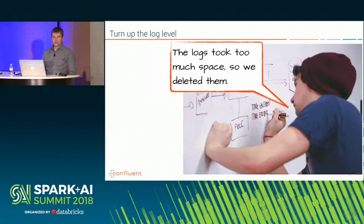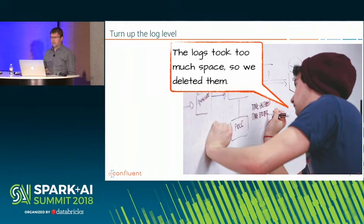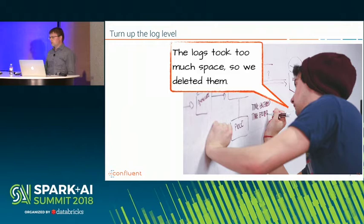If you're still having problems, the next thing we recommend is to turn up the log level. Sometimes clients tell us they added debug or trace logs but then deleted them because there were too many — that's not very helpful. Any time you feel something is going on with your Kafka clients, turn up the log level to at least debug, especially on the producer side. The producer side is not very verbose, so you should definitely up the level there, maybe even to trace if you're having network issues on the Kafka side.